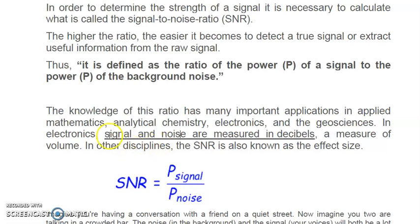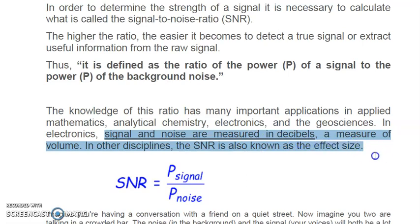In electronics, signal and noise are measured in decibels. In electronics and communication engineering, the unit used is the decibel. Just now I said signal to noise ratio is dimensionless, and now I am saying it is measured in decibels — let us understand how.